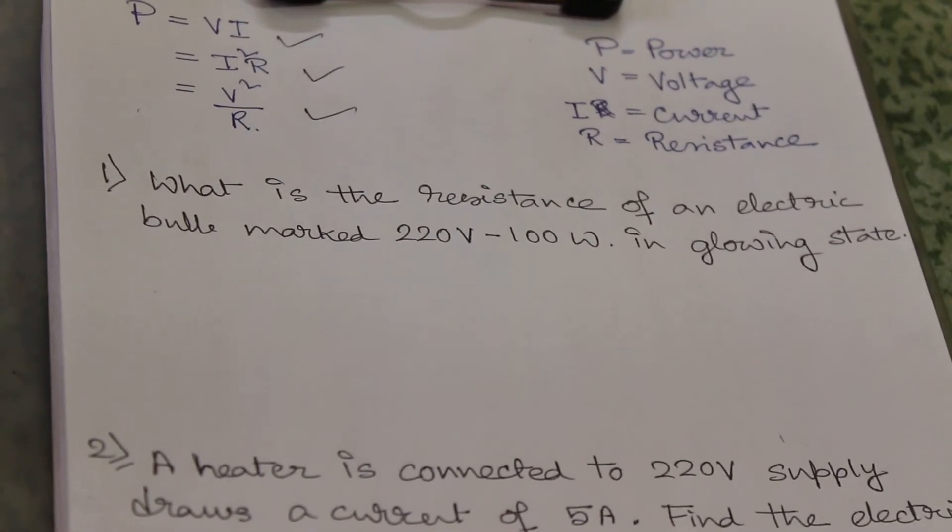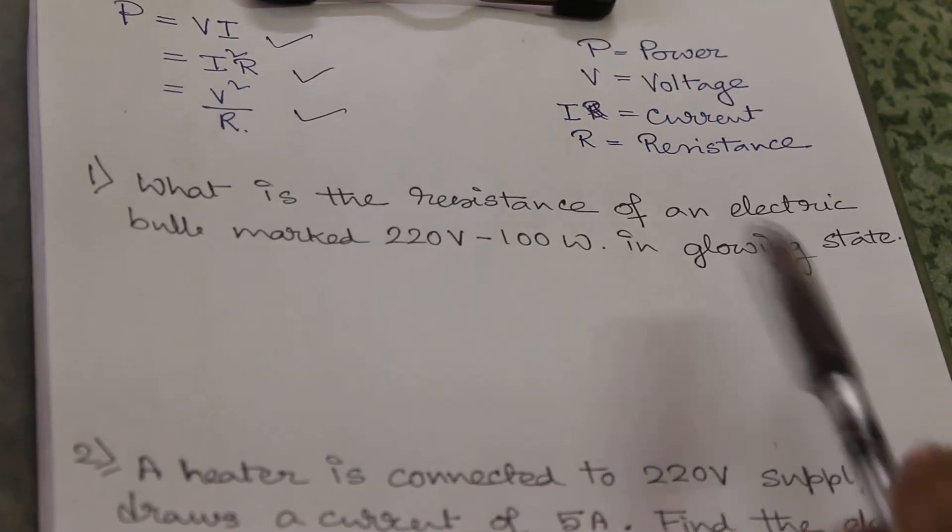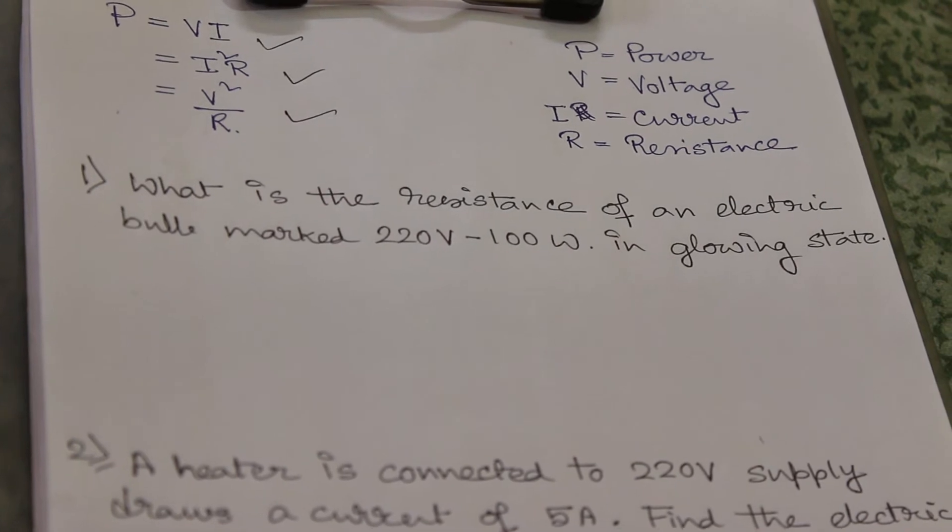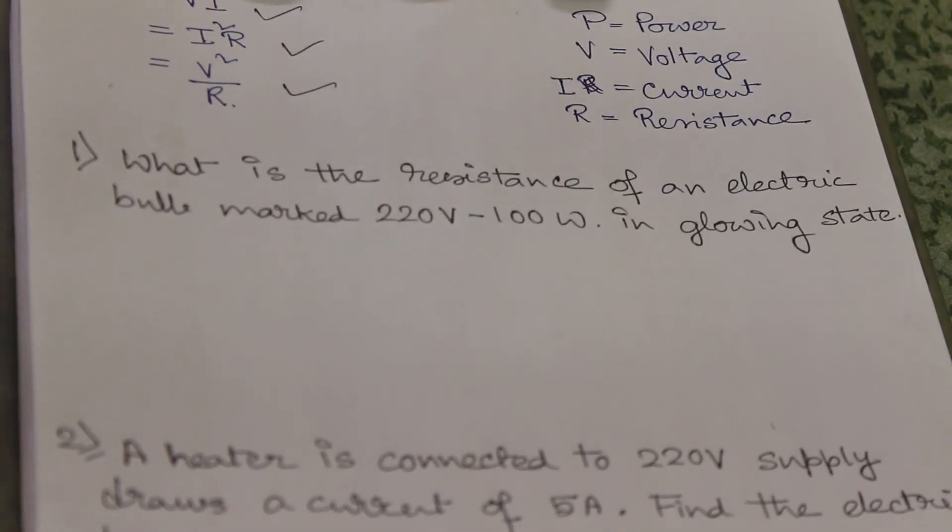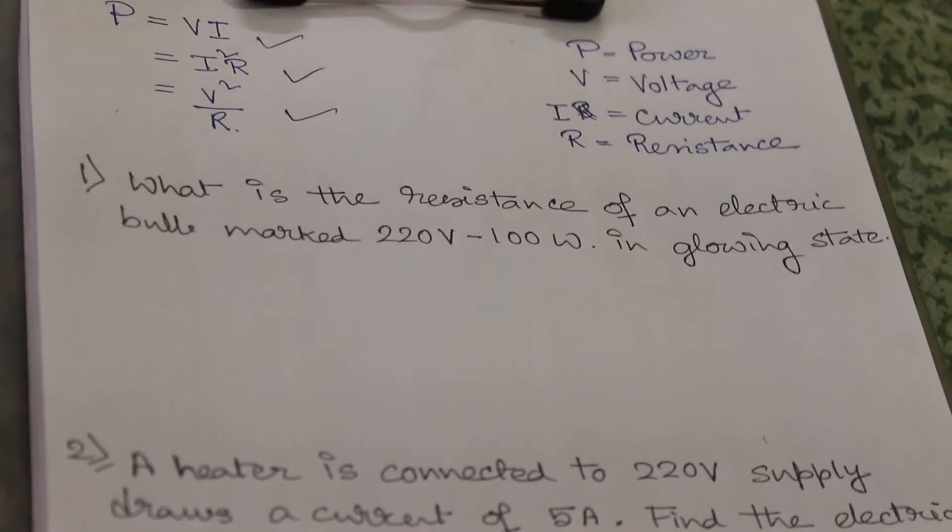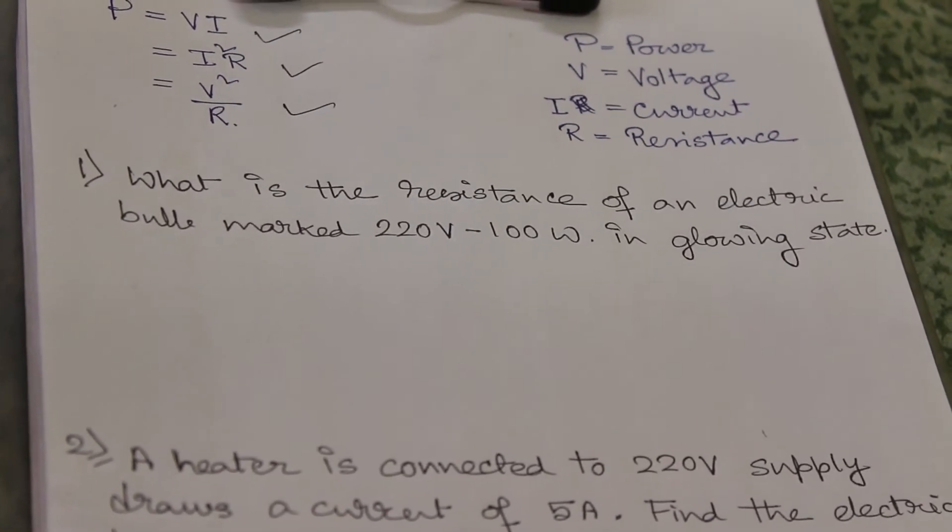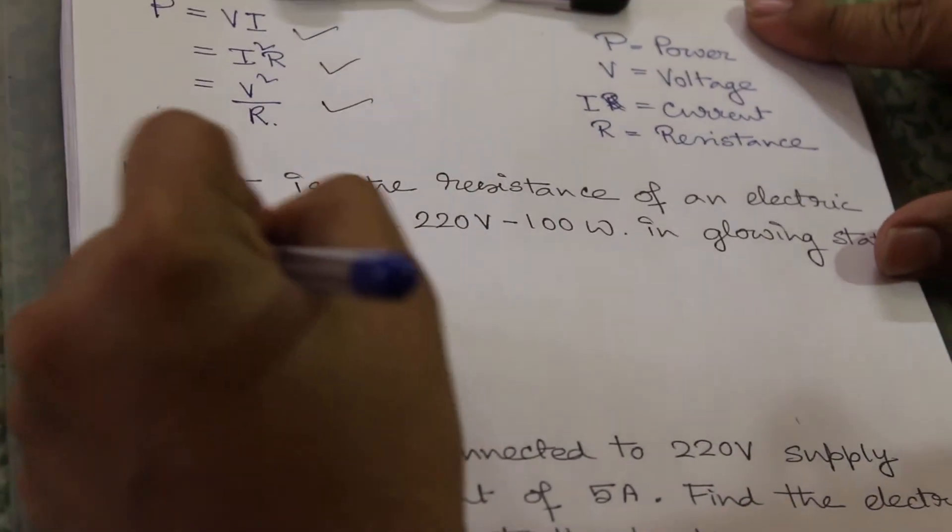What is the resistance of an electric bulb marked at 220 volt, 100 watt, in glowing state? So here power is given, voltage is given, we have to calculate the resistance, so we will use this formula.